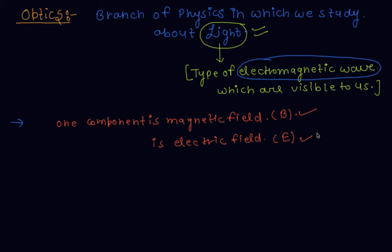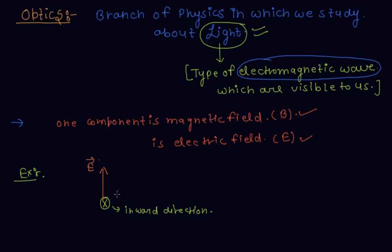Let's take an example of electromagnetic wave by which you can imagine what is the electromagnetic wave and how electromagnetic wave travels in space. If I take an example, let's take a magnetic field component — the direction of magnetic field component is inward to the plane of paper. This sign represents inward direction. And I take the electric field component in the positive y-direction, towards the positive y-axis. Magnetic field is represented by yellow color and electric field is represented by red color. This is the electric field direction and this is the magnetic field direction. And magnetic field is represented by capital B.